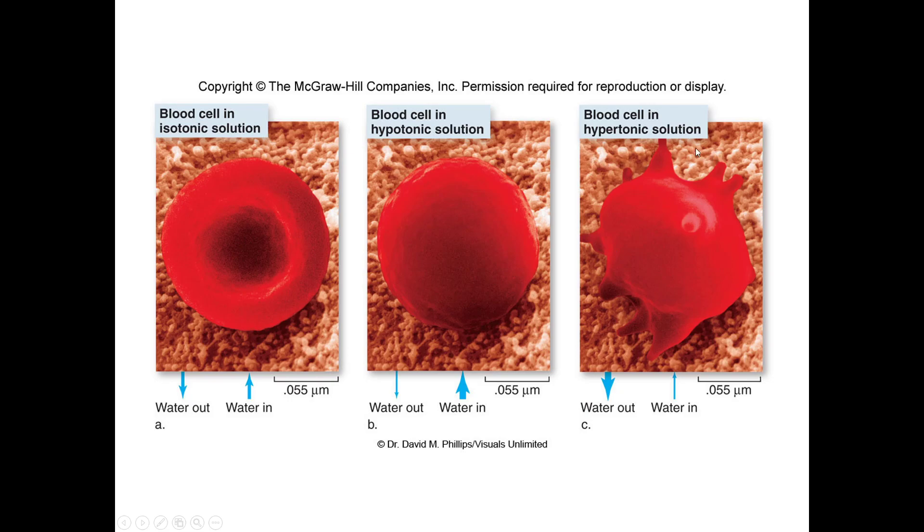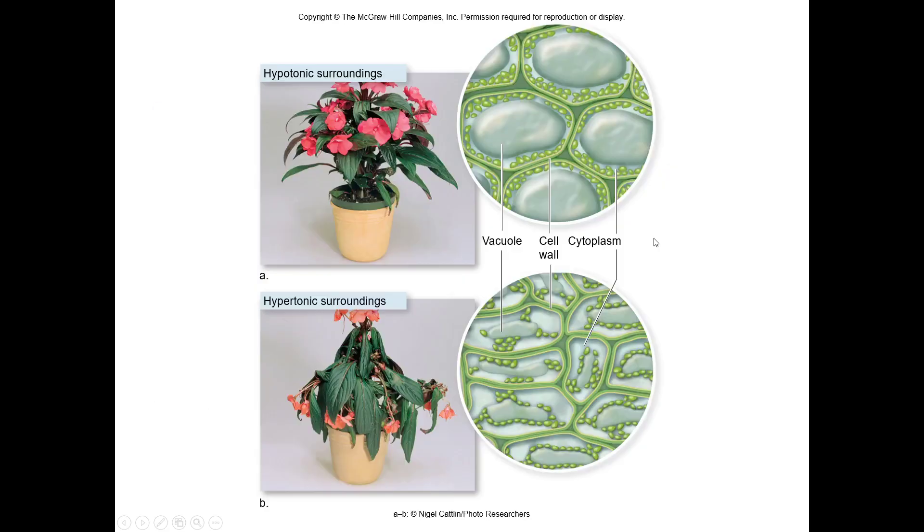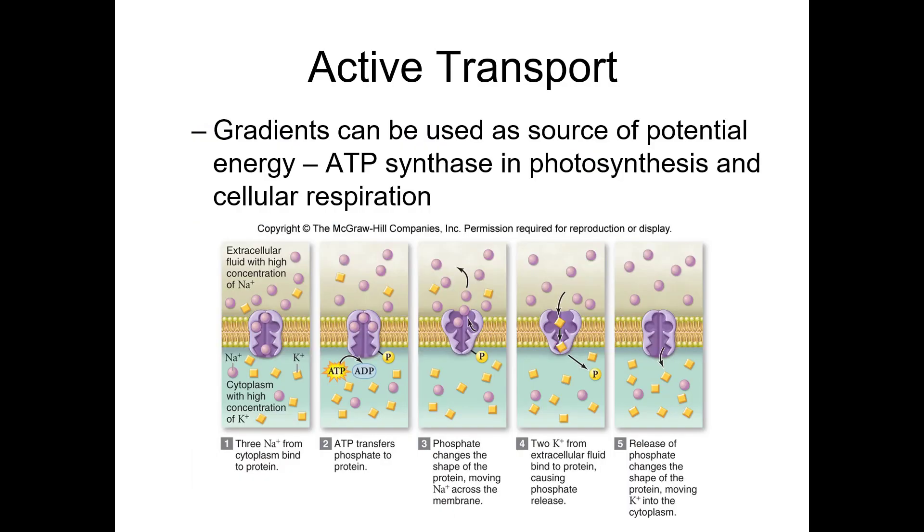Hypertonic means a high solute concentration and therefore less water. So water comes out of the cell because there's more water in the cell than on the outside. The cell shrivels up. Same thing with plants. Hypo, they love it because their cell wall prevents bursting. Hyper, they hate it. That's when you know you need to water your plants more because water is actually leaking out. It's not coming into the cells. You need to saturate the soil and their cells with water. They like the hypotonic surroundings.